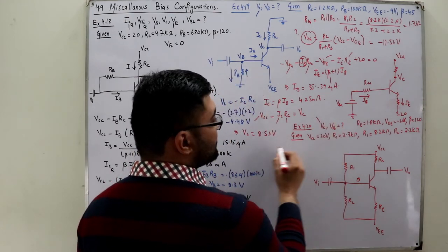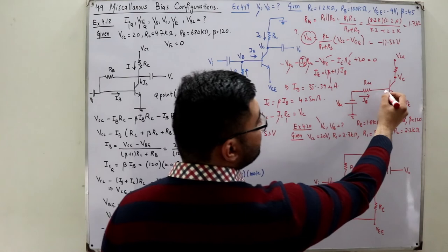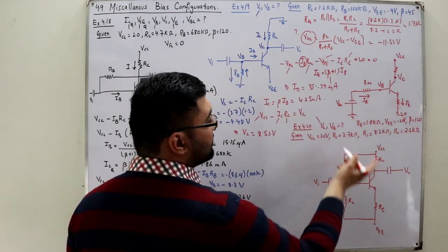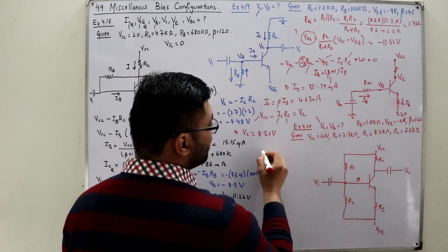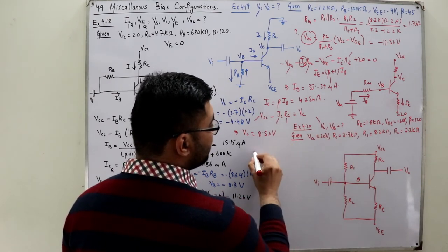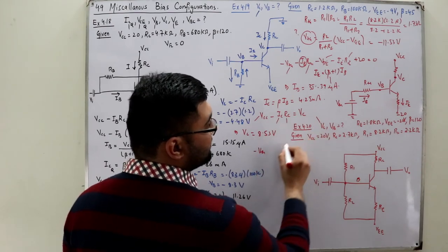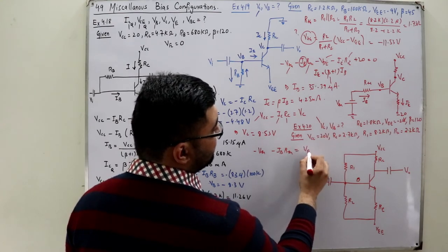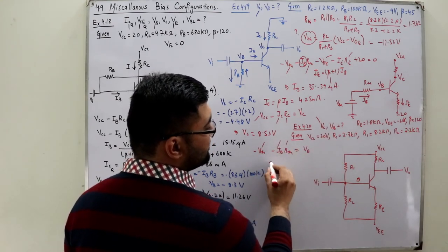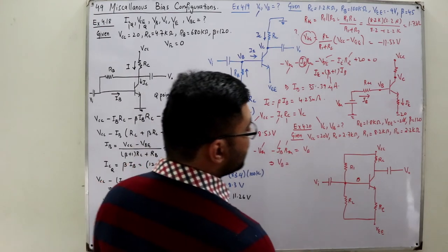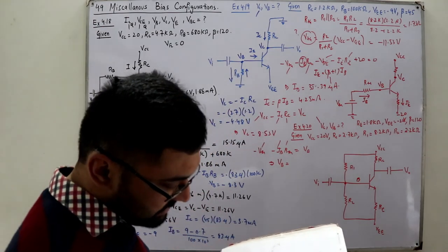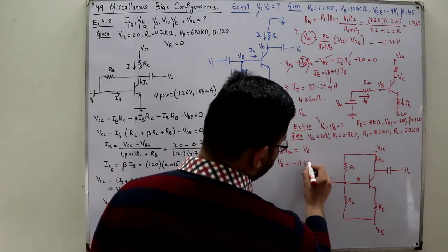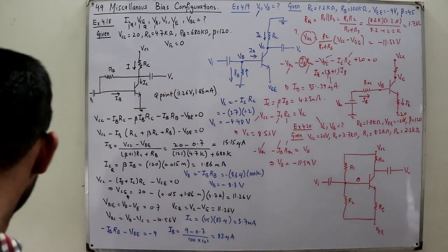For VB, the potential at the base point: starting from V_TH and going through R_TH gives: VB = negative V_TH minus IB·R_TH. Substituting V_TH = 11.53V, IB = 35.39 µA, R_TH = 1.73kΩ, the base voltage comes out to be negative 11.59 volts.